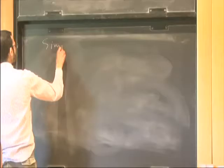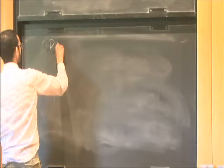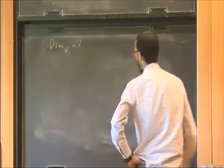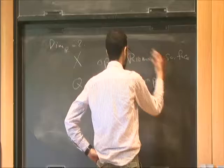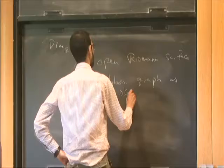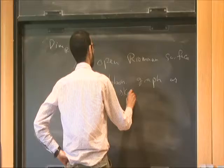Since I managed to weed out most of the audience, now we can do examples. The simplest example is in dimension one. So let's discuss dimension one over r equal to two. We're going to let X be an open Riemann surface. And Q is going to be a ribbon graph that is a skeleton of X.